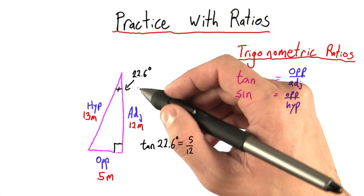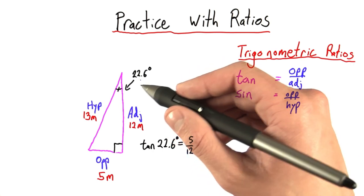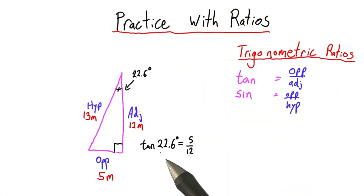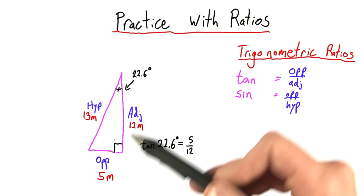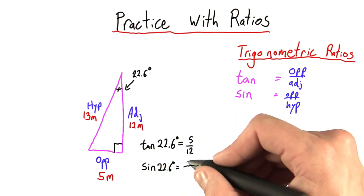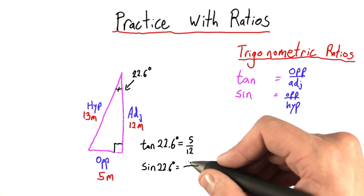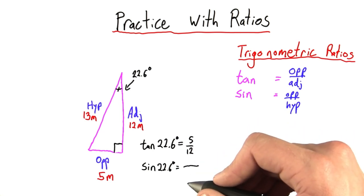Can you tell me what would the sine of 22.6 degrees be? Remember, the tangent of 22.6 was 5 over 12. What's the sine? Enter in your answer here. So you can enter it as a fraction with the numerator up here and the denominator down here.